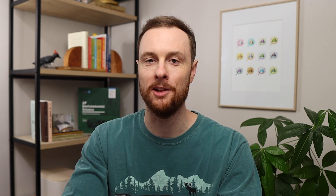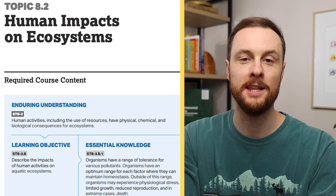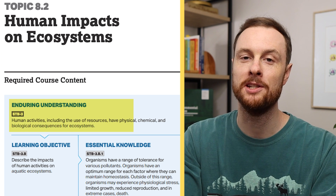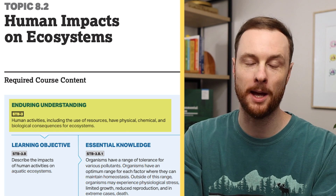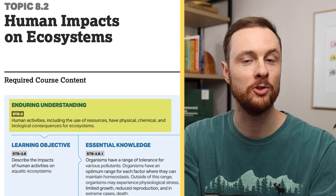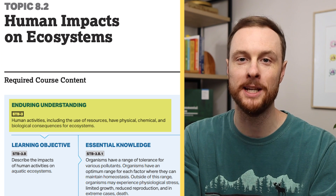When it comes to all of these aquatic and terrestrial pollutants in Unit 8, there are two enduring understandings from the College Board. The first is that human actions have physical, chemical, and biological consequences for ecosystems — pretty much the same as Unit 7, except instead of focusing on the atmosphere, we're focusing on ecosystems.